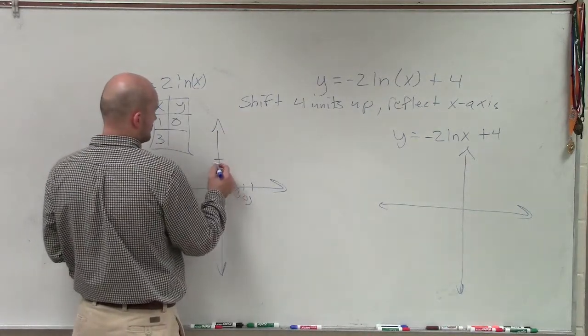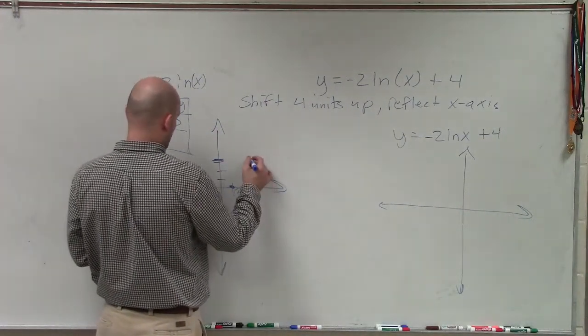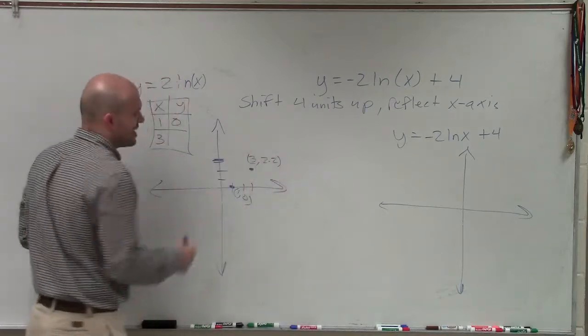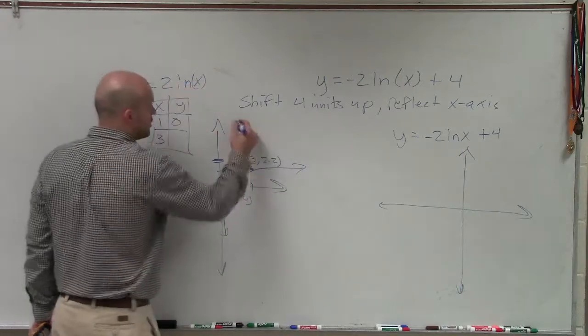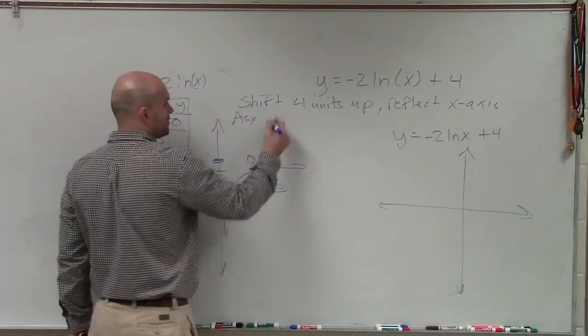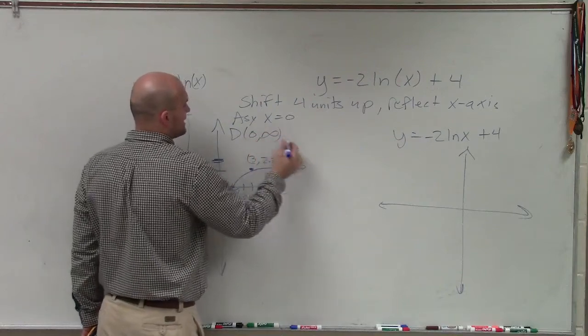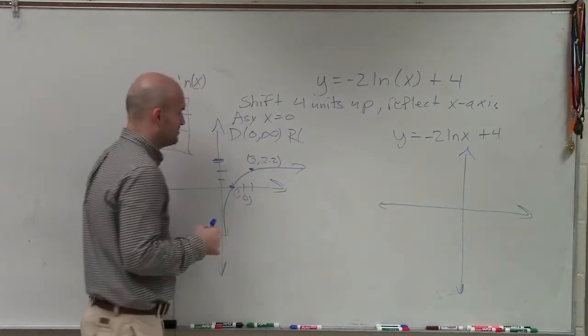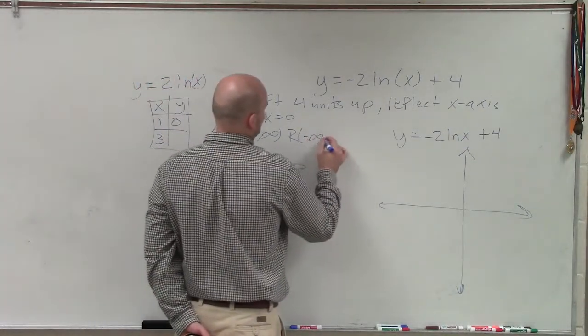So at 2, 2.2, we'll do over 3, comma, 2.2. And again, this is an approximation of the point. But you can see my graph is going to look something like that, where my asymptote for the parent graph is going to be x equals 0, my domain is from 0 to infinity, and my range is going to be from negative infinity to infinity.